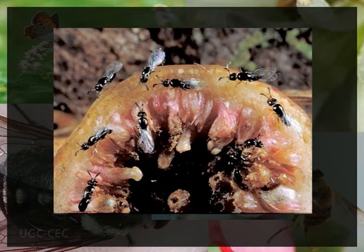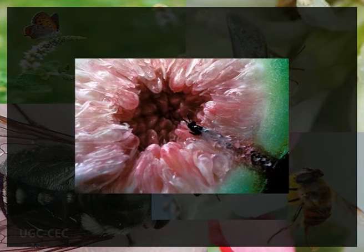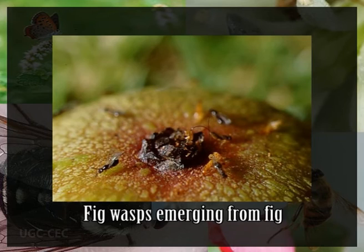Figs and fig wasps have evolved to help each other and are interdependent for reproduction. Fig wasps lay their eggs inside the fruit, where the wasp larva can safely develop, and in return the wasps pollinate the figs. Fig wasps are responsible for pollinating almost one thousand species of figs. These wasps and fig trees are obligate mutualists, meaning they cannot reproduce without each other. The mutualistic relationship between fig trees and fig wasps is co-evolutionary and highly obligated — each fig species generally has its own wasp symbiont as pollinator, and the wasp on the other side is host specific. This specificity is advantageous to both fig trees and fig wasps.